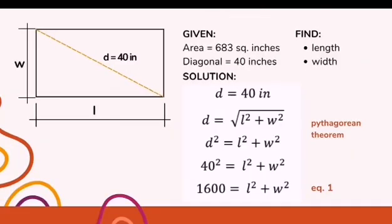So the given is the area and the size of television, which is area equals 683 square inches, and the diagonal or the size of the television equals 40 inches. So yung nasa gilid niya is halimbawa nito yung television screen, and since pa-diagonal siya, ganito ang hati niya ng 40 inches.